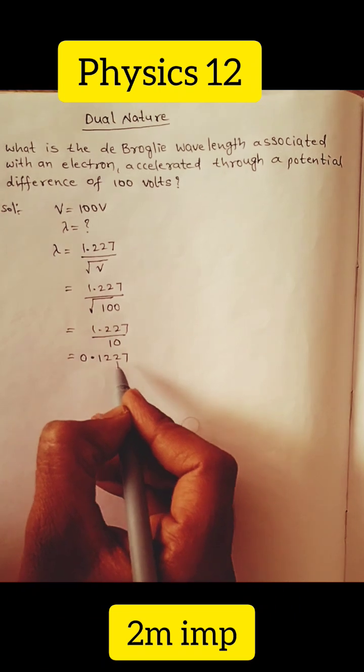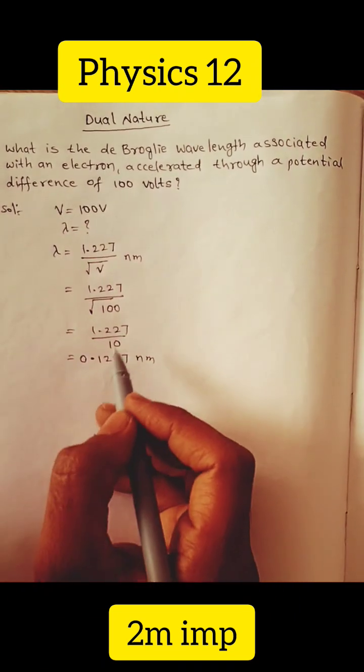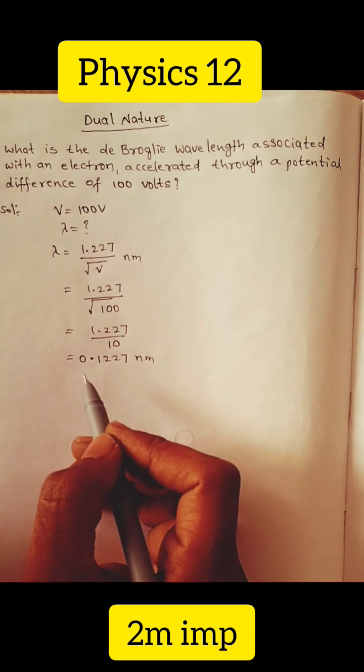This is 0.1227 nanometer. The formula: lambda equals 1.227 by root V, nanometer.